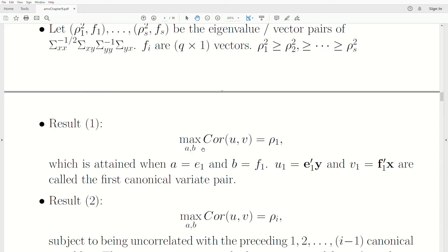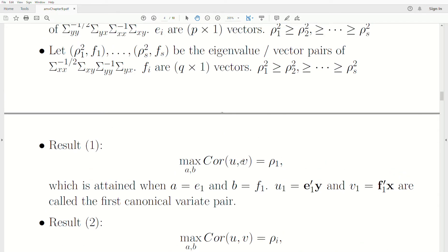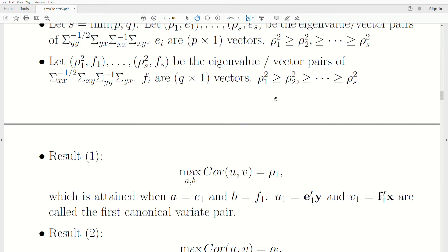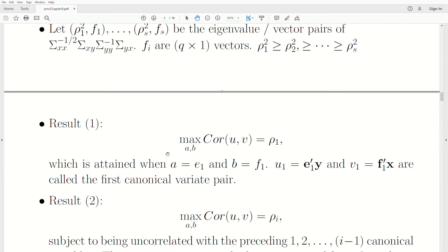So the result is the maximum correlation between U and V, which are the linear combination of the variables, is rho. It's the square root of the largest eigenvalue up here. And it's attained when A is e1 and B is f1. So these are the coefficients in front of the variables Y and X. And so that's it. So U1 and V1 are called the first canonical variate pair. And we stick in a 1 there, meaning we took the eigenvectors associated with the largest eigenvalues.